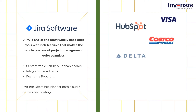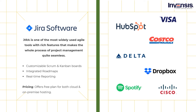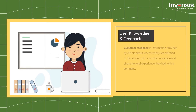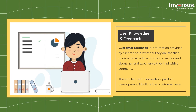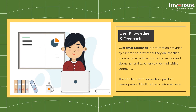Thousands of modern software teams already use Jira software and other solutions from the Atlassian suite. Its customers include Airbnb, Spotify, Cisco, Domino's, eBay, Rosetta Stone, and many others. Next in the list we have user knowledge and feedback tools. You've done everything possible to satisfy your customers — how can you be sure your customer service strategies are working? How do you know if your customers are happy with their experiences in your company? This is where your customer service tools come in.